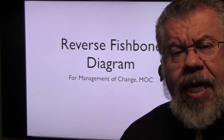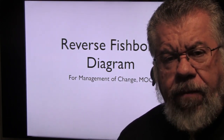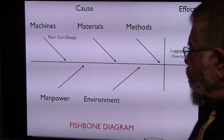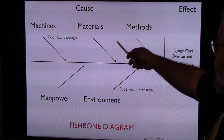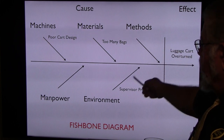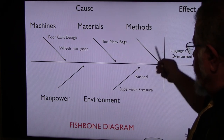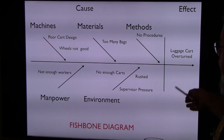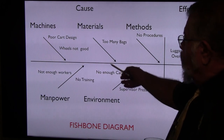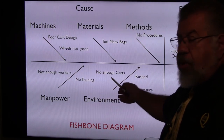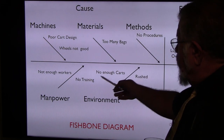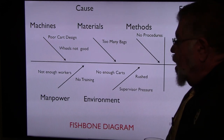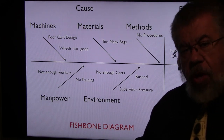Now we are familiar with the Ishikawa fishbone diagram — it's a cause and effect diagram. In the traditional fishbone diagram, we have our causes: we list the five Deming forces — machines, material, methods, manpower, and environment — and then we have our effect. In this case, a luggage cart overturned. We brainstorm specific causal factors that give us a focus in those particular areas, and that's why it's called a cause and effect diagram.